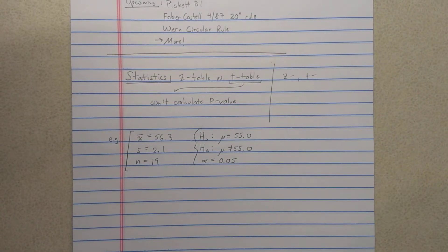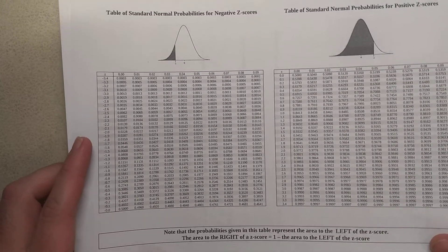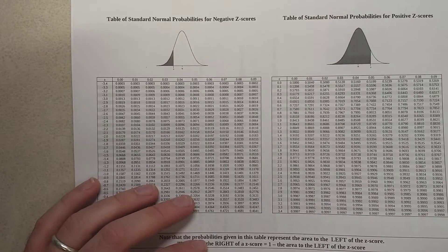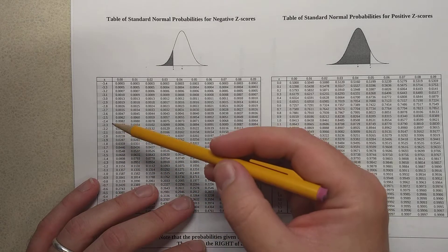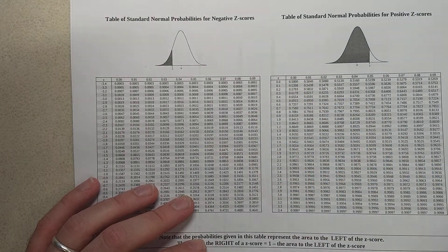Here's your classic normal distribution z-table. The nice thing about the z-table is you can look up your z-score and you can find your probability, and you could do that in reverse also.